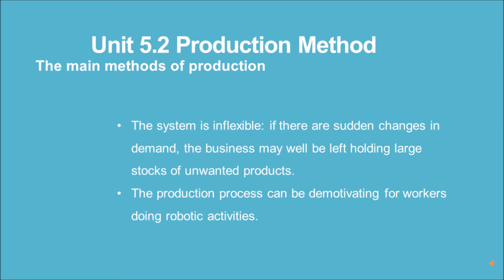Disadvantages of mass production: set up costs will be high, and breakdowns are costly as the whole assembly line may have to stop. The business is very dependent on steady demand from a large segment of the market. The system is inflexible — if there are sudden changes in demand, the business may be left holding large stocks of unwanted products. The production process can also be demotivating for workers doing robotic activities.